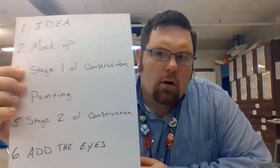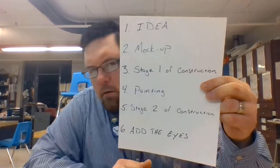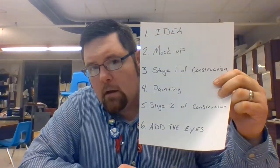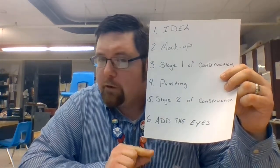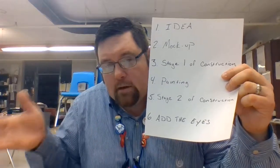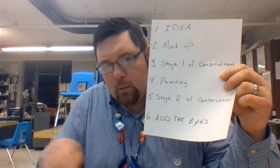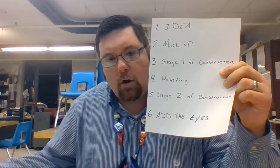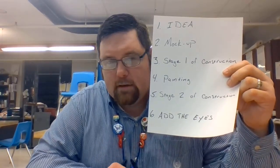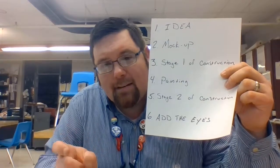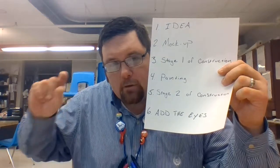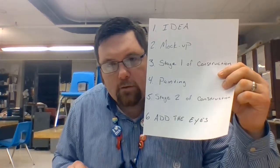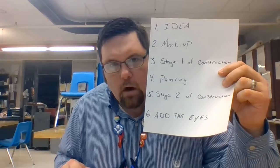Here are the steps to the process. First, you've got to come up with an idea. Then you've got to do a mock-up. Then you begin your construction — just the first part of construction — where you build the pieces. Then we're going to paint, and then put it all together, which is step five, stage two of construction. The last step is to add the eyepiece, using perspective to make those eyes follow you when you walk in front of the sculpture.